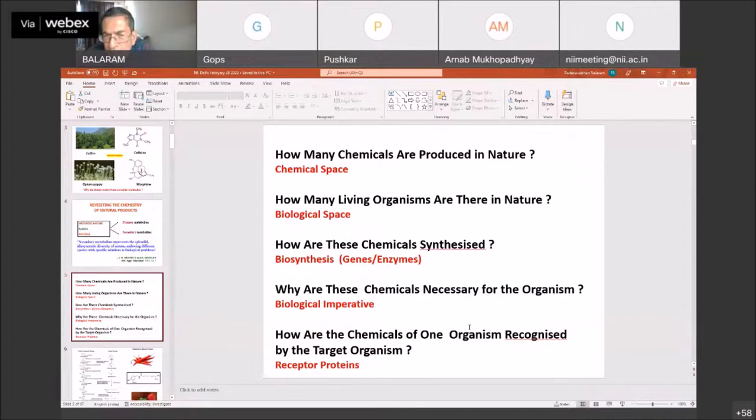Organisms, every organism other than human beings, communicates with one another largely by means of chemicals. Certainly microbes, plants, insects communicate almost exclusively by means of chemicals. Larger animals, sometimes a little bit by sound. Human beings are the only ones who communicate with complex language. We can ask the question, how are the chemicals of one organism recognized by the target organism? This takes us to the subject of receptor proteins.